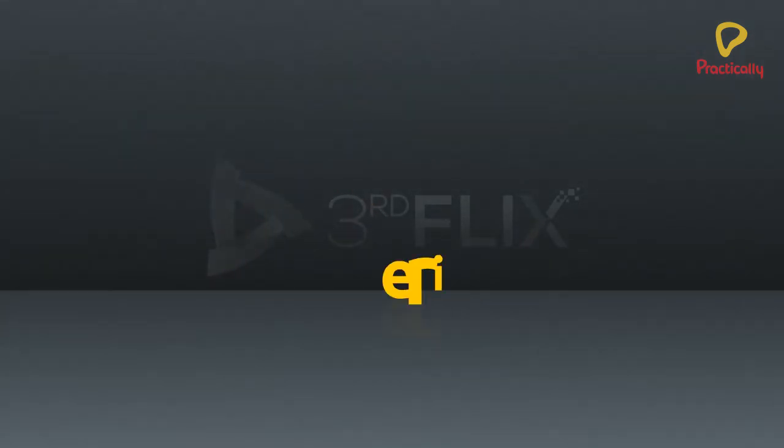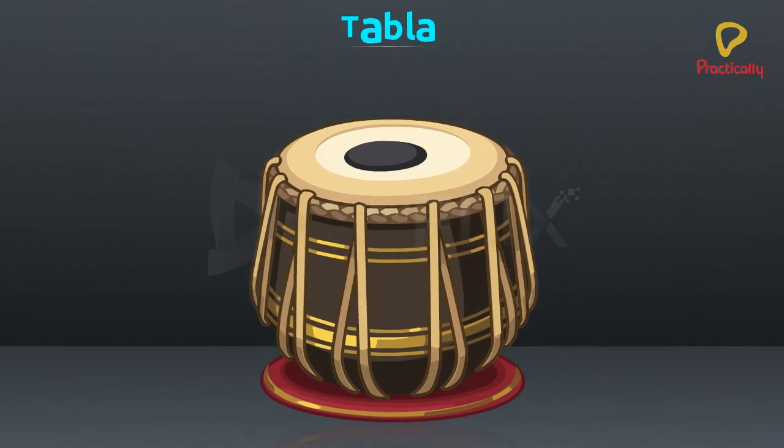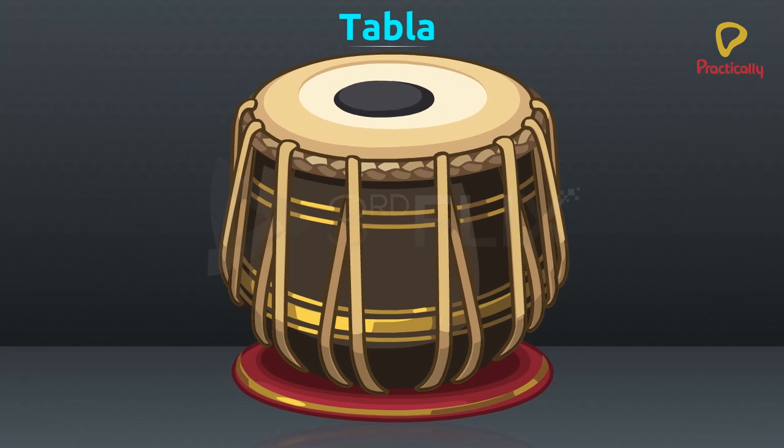Let us look at some examples of periodic motion. Tabla is a musical instrument. If you hit on the membrane of the tabla, you can observe that the membrane is vibrating, which is a to and fro motion. It is a periodic motion.